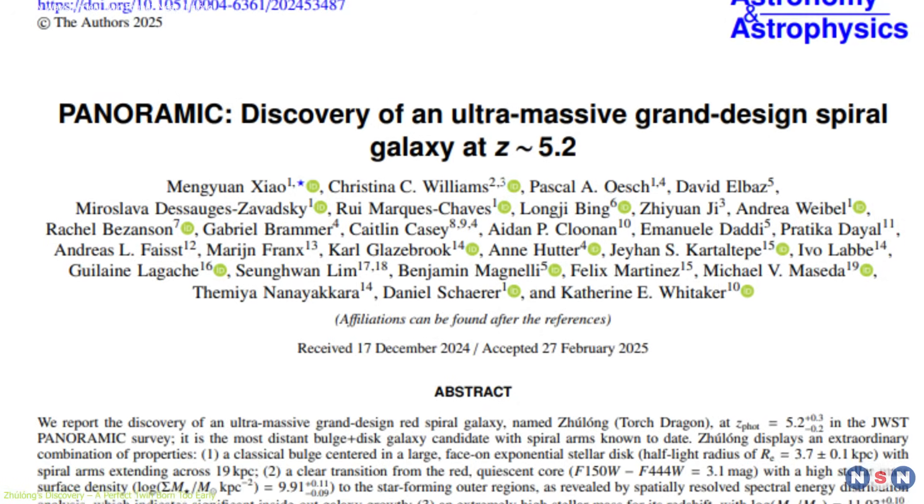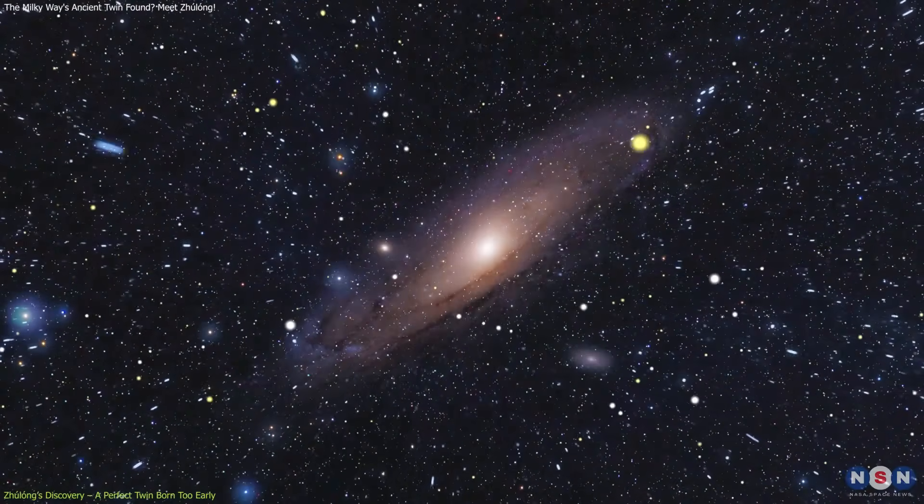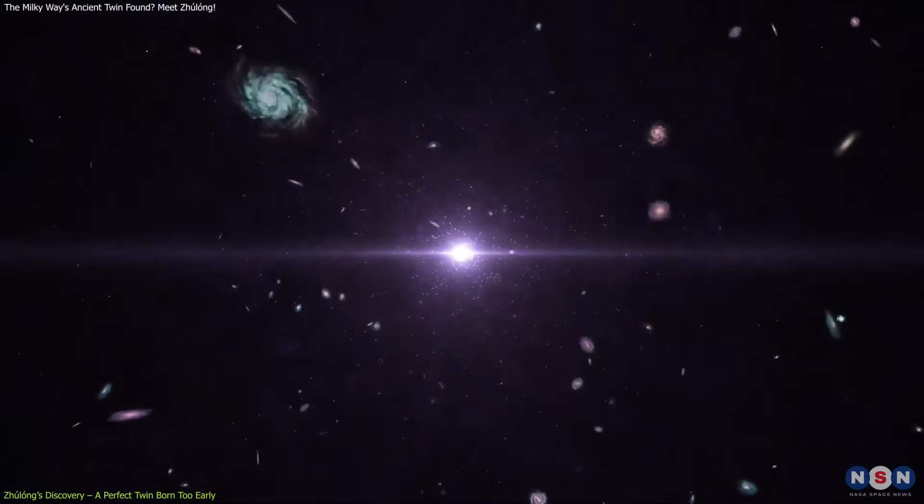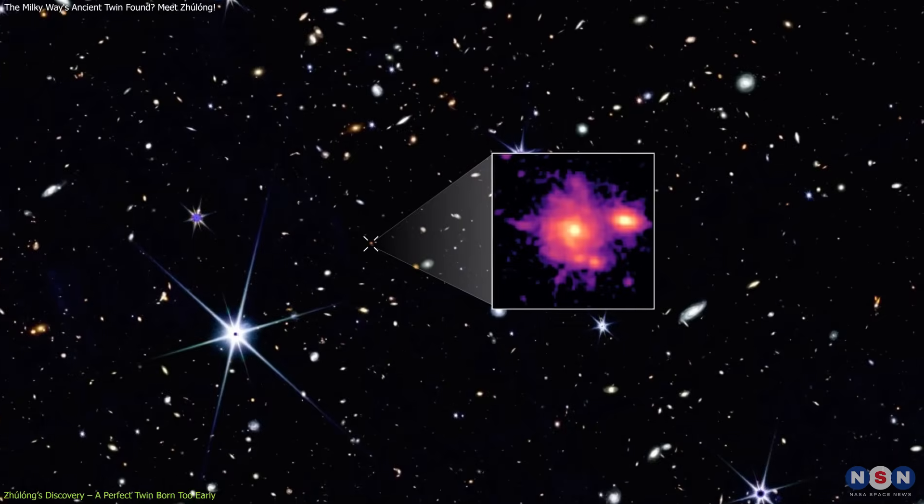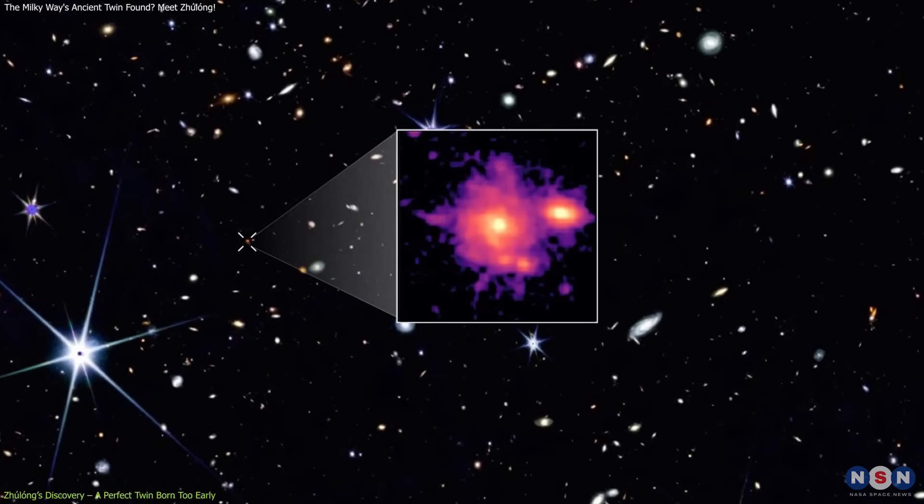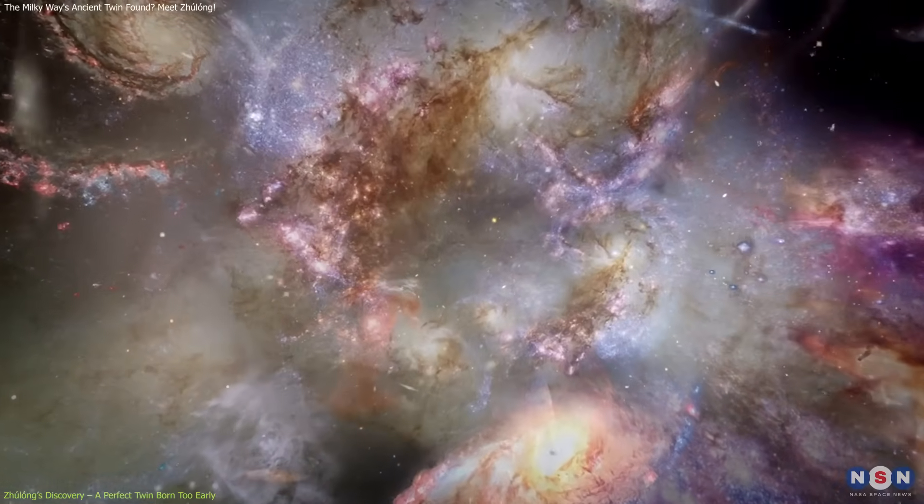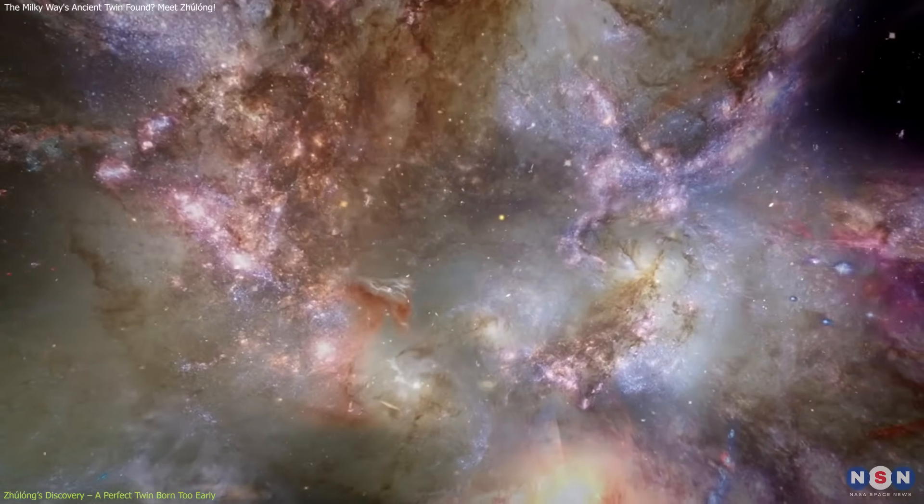Observed at a redshift of 5.2, this places it roughly 12 billion light-years away, corresponding to just about 1 billion years after the Big Bang. To find such a massive, organized, and mature galaxy at that epoch defies the long-held belief that early galaxies were small, chaotic, and irregular.